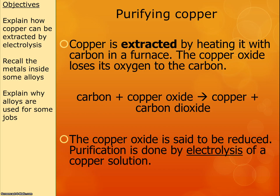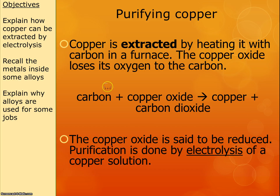Copper is extracted by heating it with carbon in a furnace, and the copper oxide loses its oxygen to the carbon, and we end up with copper left over. So we go: carbon plus copper oxide gives copper plus carbon dioxide. This is the word equation for that reaction that you do need to know.